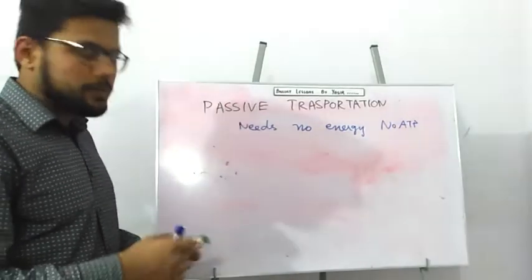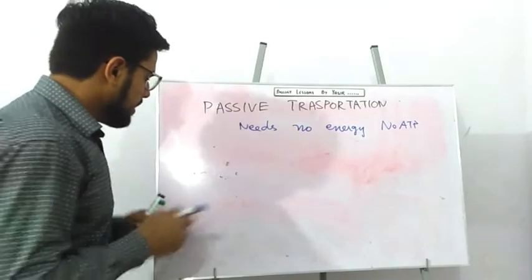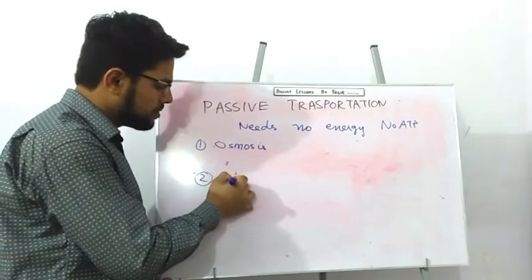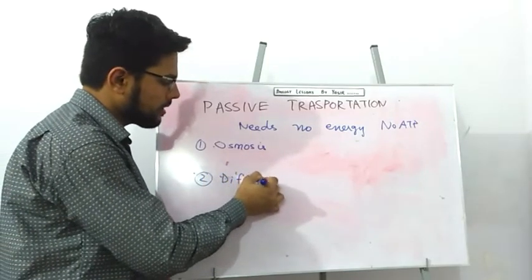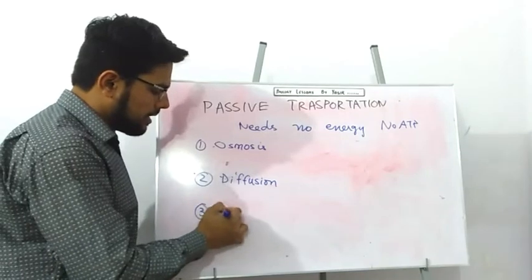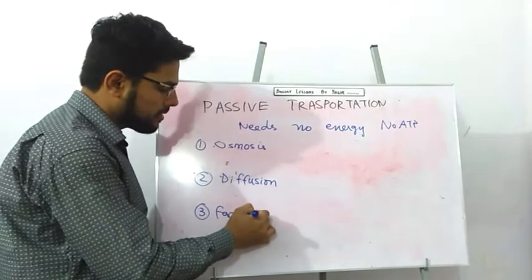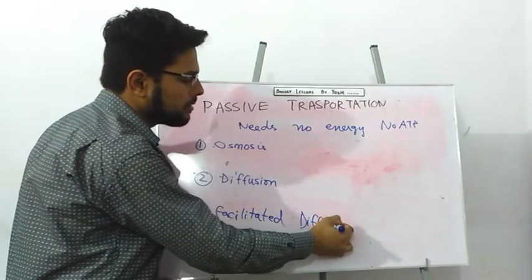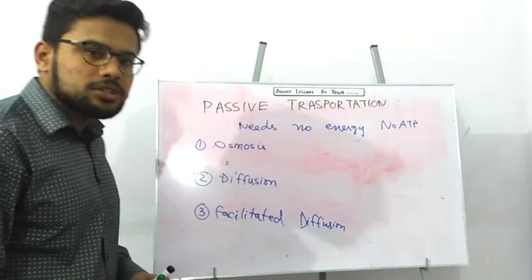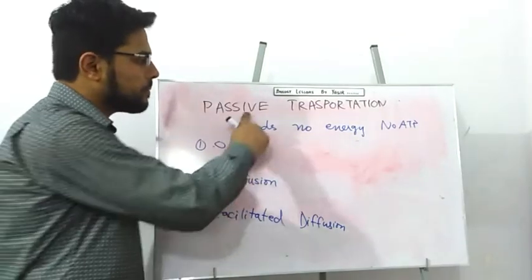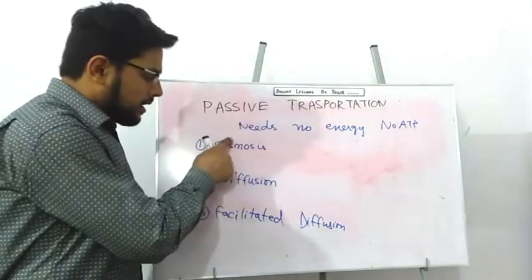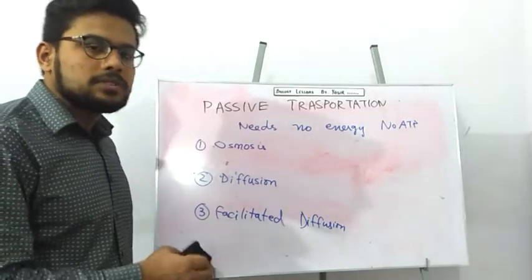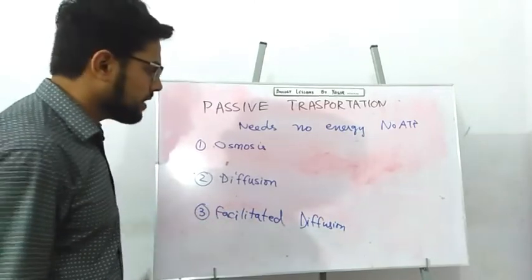There are three main types of passive transportation: number one is osmosis, number two is diffusion, and number three is facilitated diffusion. All three types do not require any ATP; substances move without the consumption of energy.